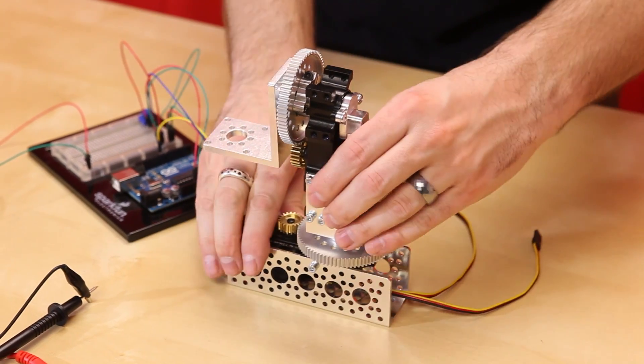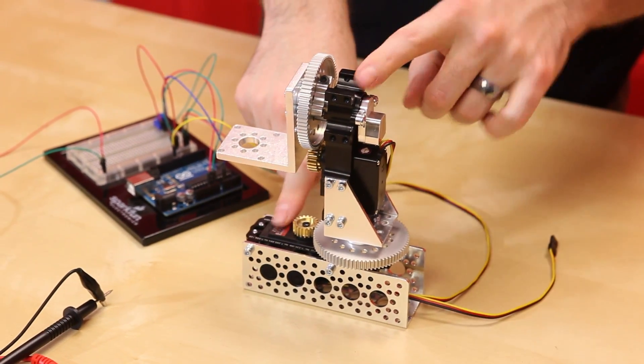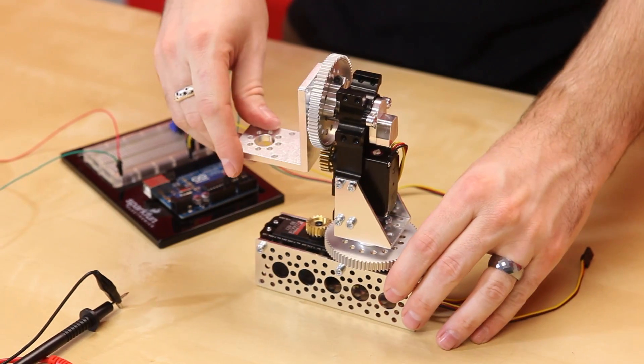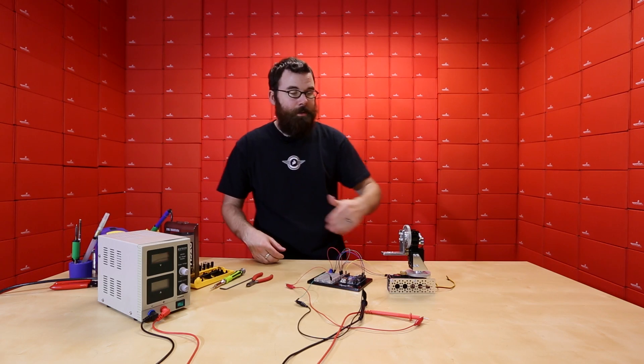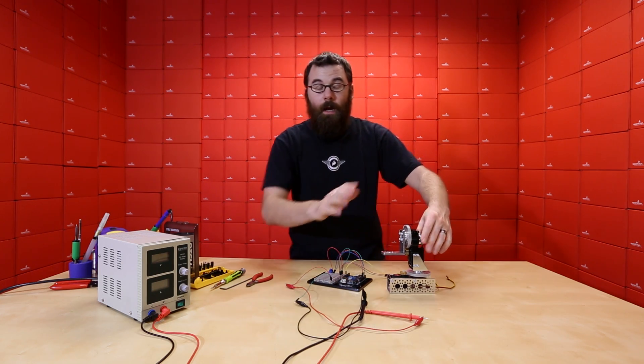Here we have a really simple pan tilt that consists of a couple servos, a couple gears in this little configuration. We've got it hooked up to an Arduino with a little knob here that is controlling the PWM signal that will sweep this top servo.